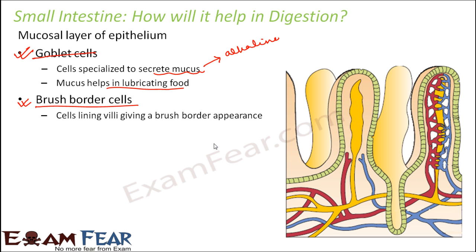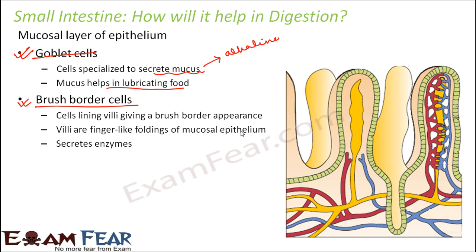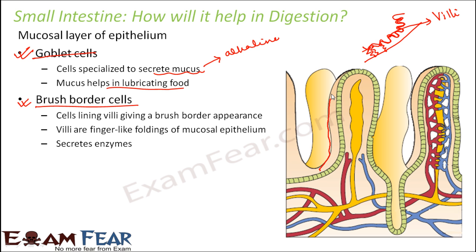Villi are nothing but finger-like foldings of the mucosal epithelium. The inner layer has foldings of this pattern — these are finger-like projections, and each of these projections is known as a villus. If you magnify this part, it will look somewhat like this — a finger-like projection.